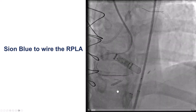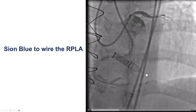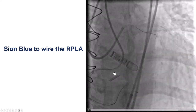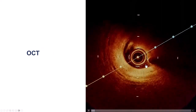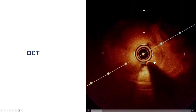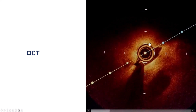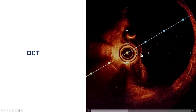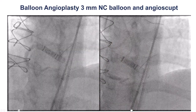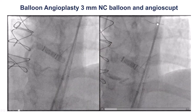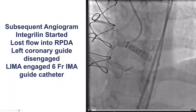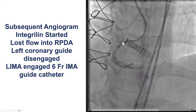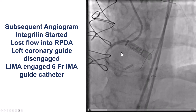We were obviously highly encouraged by this, since the crossing is often the most time-consuming part of CTO intervention. We advanced workhorse wires and did optical coherence tomography, which demonstrated a large amount of thrombus within the right coronary artery. We did balloon angioplasty including with an AngioSculpt balloon. The first injection showed a large thrombus burden in the RCA.